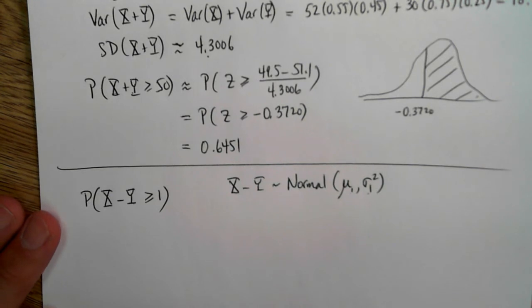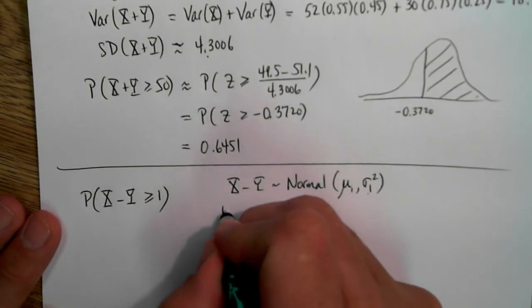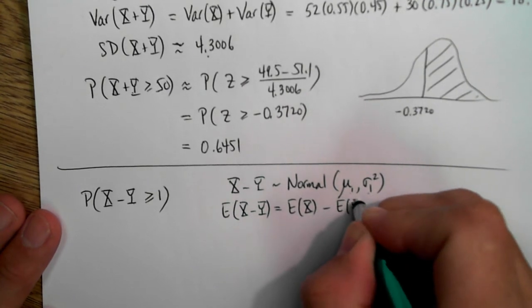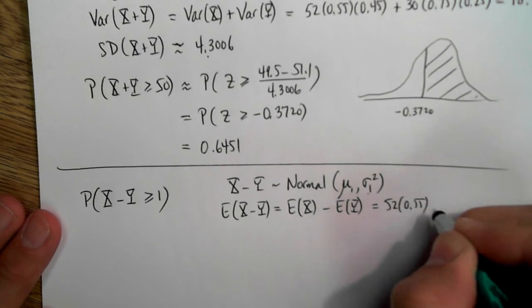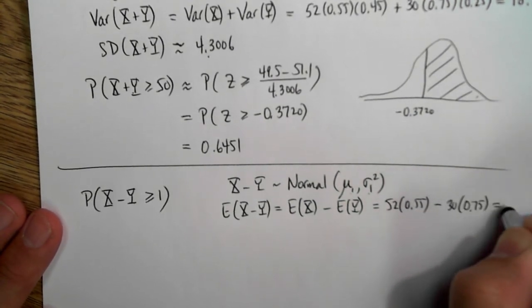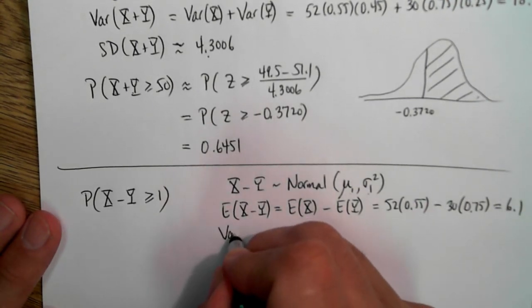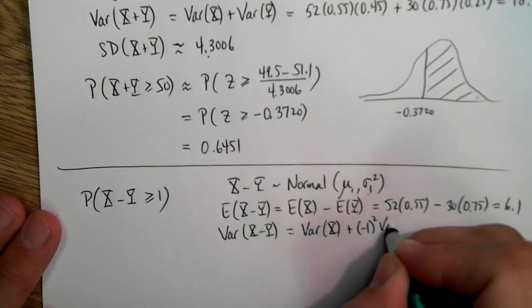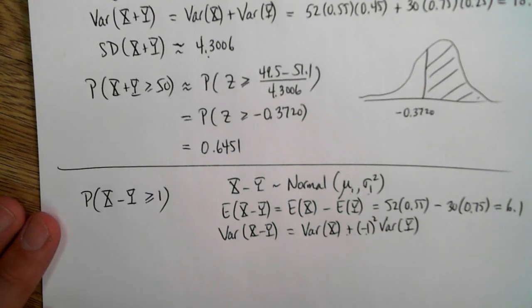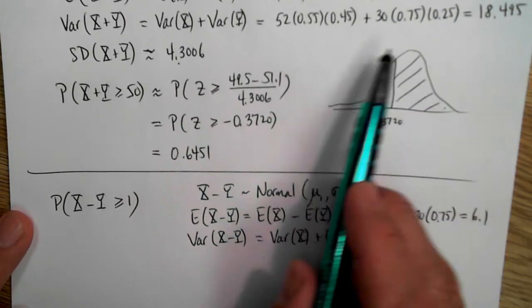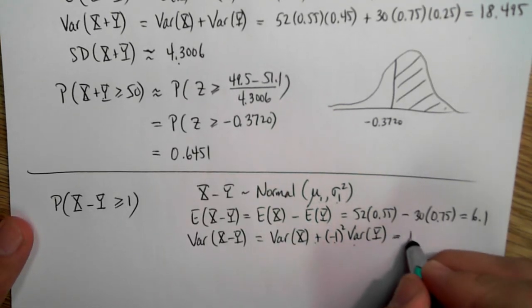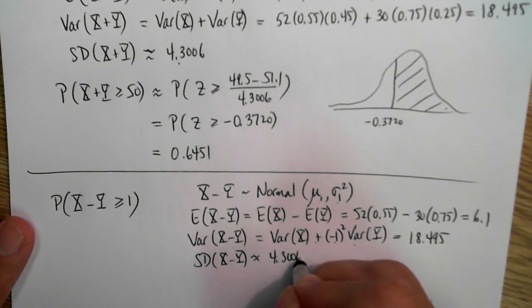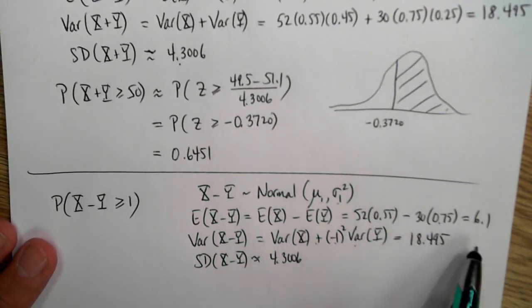The expected value of X minus Y equals the expected value of X minus the expected value of Y: 52 times 0.55 minus 30 times 0.75, which is 6.1. The variance of X minus Y equals the variance of X plus negative 1 squared times the variance of Y — so it's not subtracted, it's the same as the variance of X plus variance of Y, which is 18.495. So the standard deviation of X minus Y is also 4.3006. X minus Y has the same standard deviation as X plus Y, but a different mean.